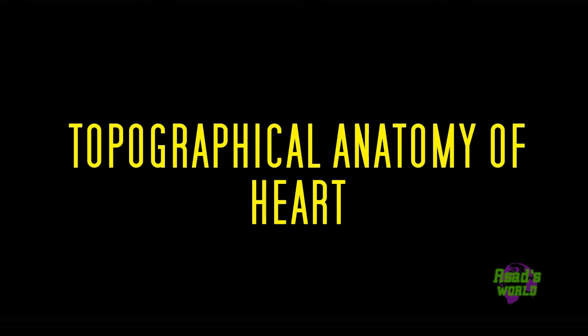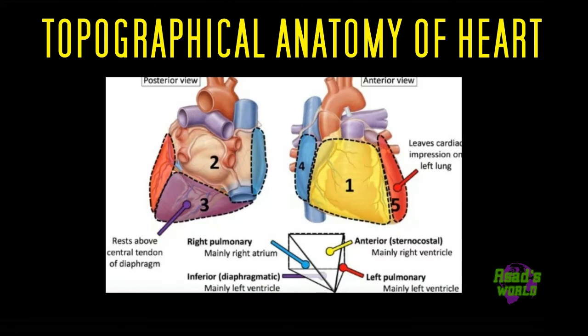The heart has five surfaces and four borders. Surfaces are formed by different internal divisions of the heart. The surfaces are namely anterior, posterior, inferior, and left and right pulmonary.